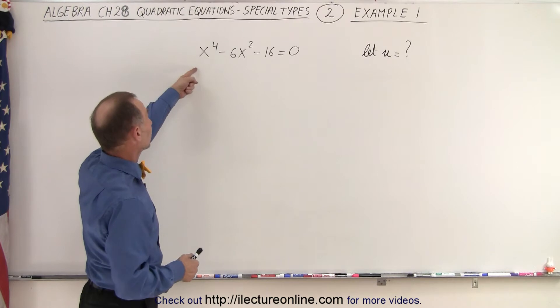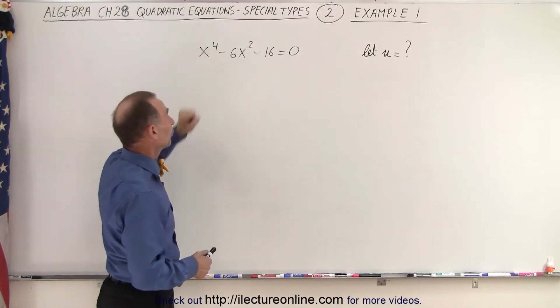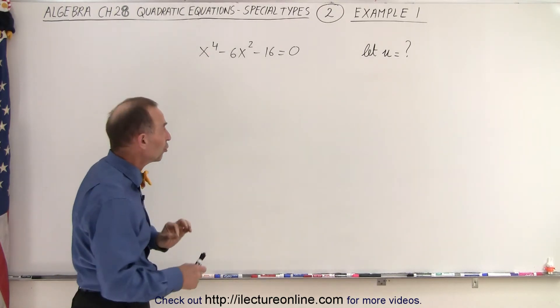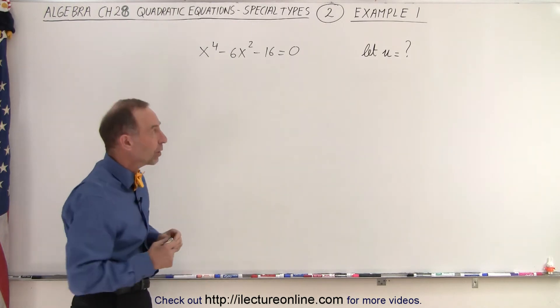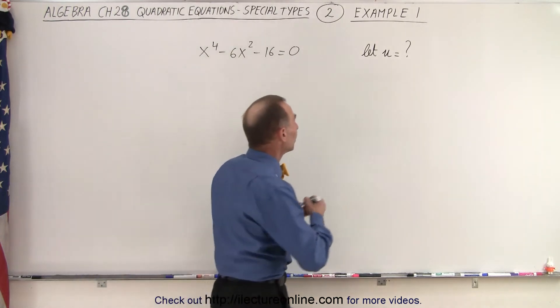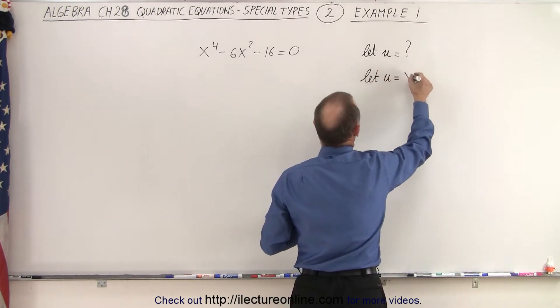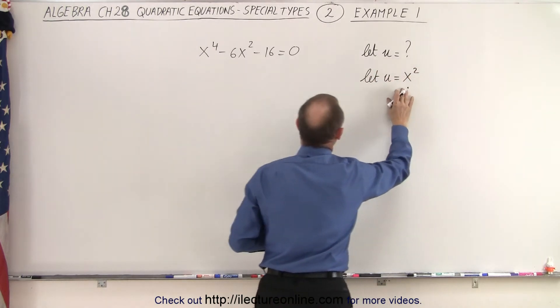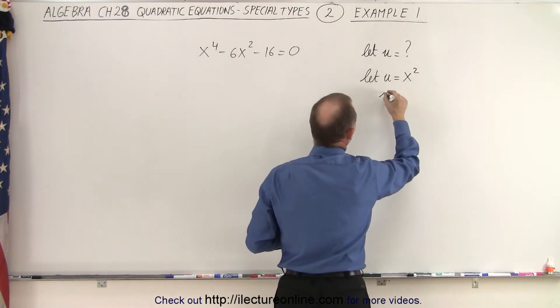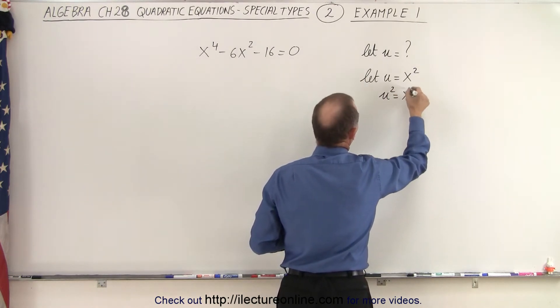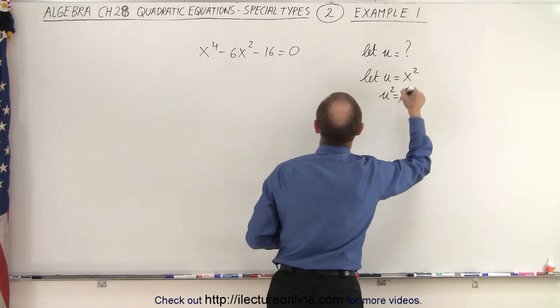It doesn't look like a quadratic equation because it's x to the fourth power, but if we make the right substitution, we can turn it into a quadratic equation. So what we can do here is we can say let u equal x squared. If we do that, then we can square both sides and say that u squared equals x to the fourth power and we'll make those substitutions in here.